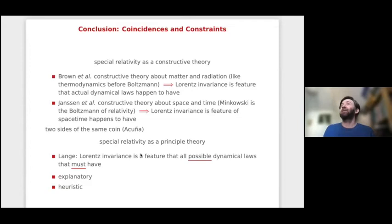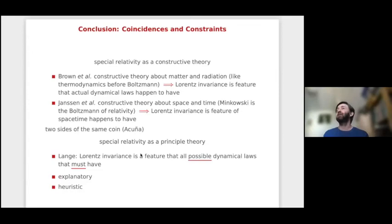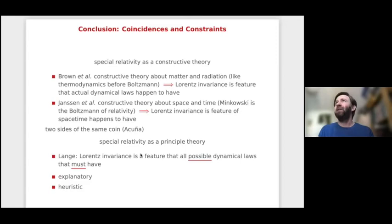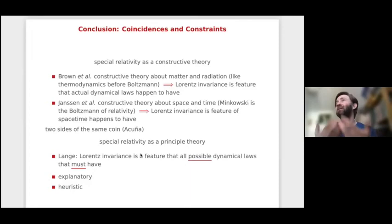I think it is much better to keep with Einstein's own definition: special relativity is a principle theory because it is a constraint — a requirement that all possible laws of nature have to satisfy. This accounts for the explanatory role of the theory: by requiring that all laws of nature be Lorentz invariant, we obtain new results. Why can we not detect the aether? Because all laws of nature are Lorentz invariant — which is exactly analogous to why we cannot construct a perpetuum mobile: because energy is conserved. As Lange put it, this is a form of explanation. The heuristic nature of the theory is also explained this way: all fundamental laws are expressed in terms of coordinates, so having the new Lorentz transformations is a strong constraint on possible formulations.